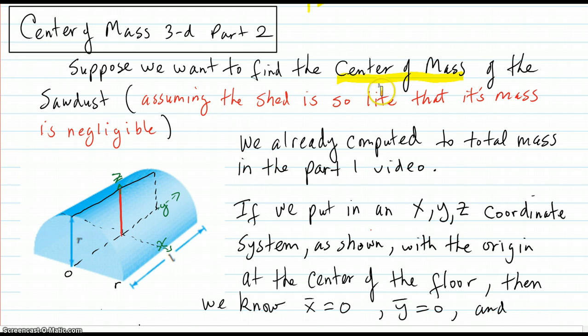We're going to assume that the shed is so light that its mass is negligible, so we're not even talking about the actual shed part, just the sawdust inside. We already computed in part 1 the total mass. That goes in the denominator of our center of mass calculation.